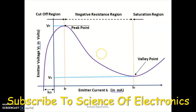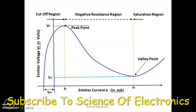This negative resistance region is used to operate the UJT as a wave generator or oscillator, generating a repetitive waveform. In summary, at the peak point voltage VP, which is greater than (eta × VBB + VD), the UJT breaks down and large current flows through it.